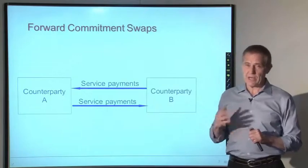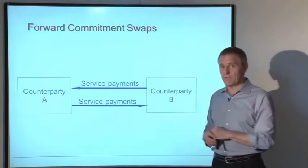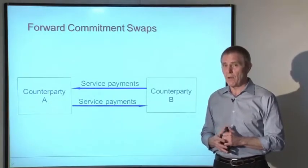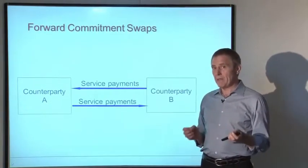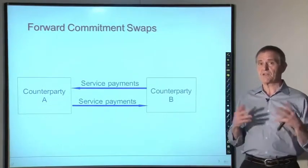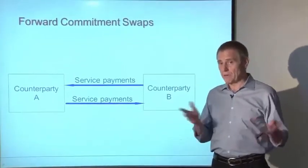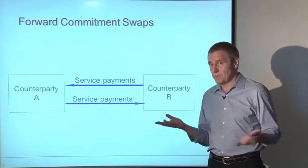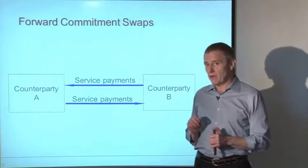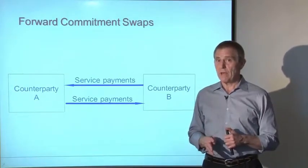The parties don't make those payments in full — there's a netting process that goes on. The commitments involve paying some form of fixed or floating interest rate. One way to think about a forward commitment swap is as a package of futures or forward contracts, though this gets fairly technical and relates to the theory of pricing and arbitrage pricing relationships between interest rate swaps and related interest rate instruments and derivatives.